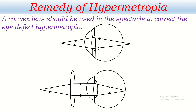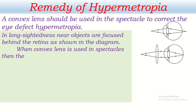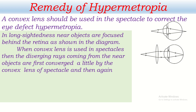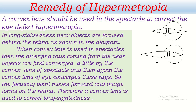This way we will be able to see near objects clearly as well. In long-sightedness or hypermetropia, near objects are focused behind the retina. When a convex lens is used in spectacles, the diverging rays coming from near objects are first converged a little by the convex lens of the spectacle, and then the convex lens of the eye converges these rays further, so the focusing point moves forward and the image forms on the retina. Therefore, a convex lens is used to correct long-sightedness.